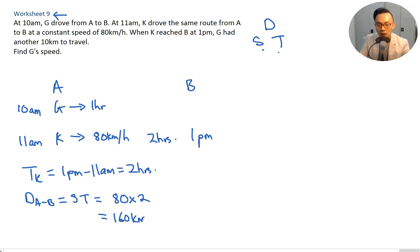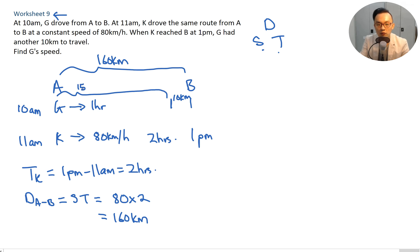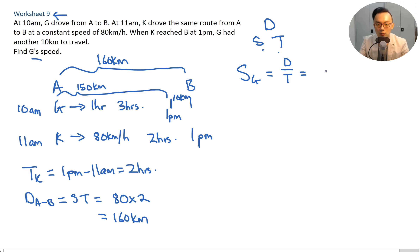Distance A to B is 160 kilometers. At 1 p.m., G still had 10 kilometers remaining, so G had traveled 160 minus 10 equals 150 kilometers. G started at 10 a.m. and it is now 1 p.m., so G traveled for 3 hours. Speed of G equals distance over time: 150 divided by 3 equals 50 kilometers per hour.